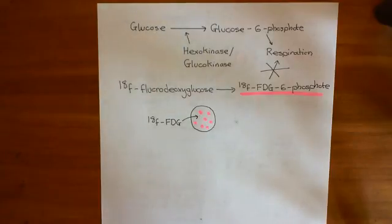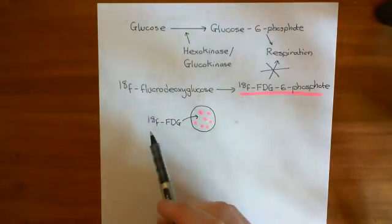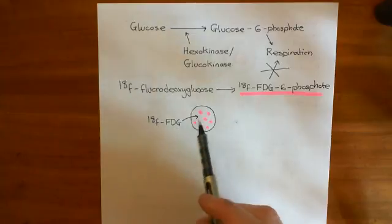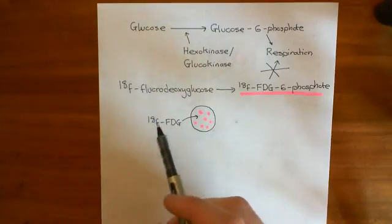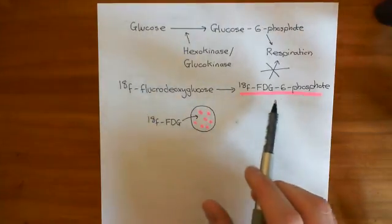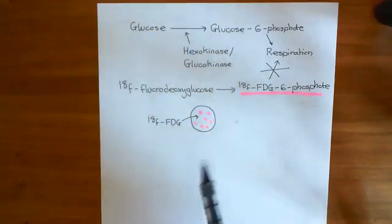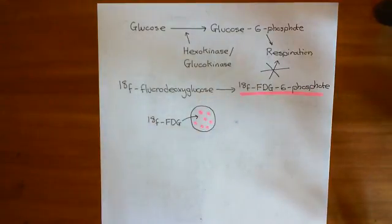So far we've seen how we can inject 18F-fluorodeoxyglucose into the person we suspect of having cancer. Cancerous cells are incredibly metabolically active and will take up 18F-FDG into their cytoplasm and will convert it into 18F-FDG-6-phosphate, which can't go any further in the respiration reactions. It can't go any further through glycolysis, so it gets trapped within the cell.